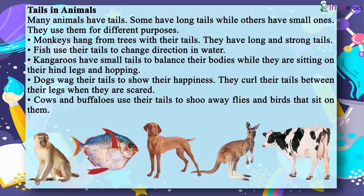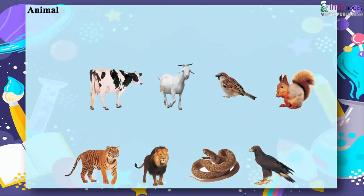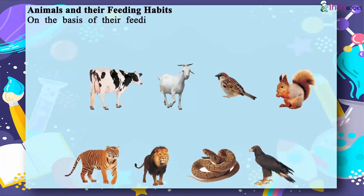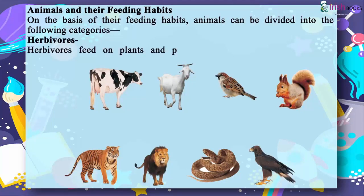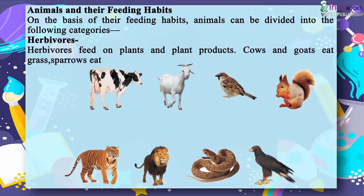Animals and their feeding habits. On the basis of their feeding habits, animals can be divided into categories. Herbivores feed on plants and plant products. Cows and goats eat grass, sparrows eat grains, and squirrels eat nuts.